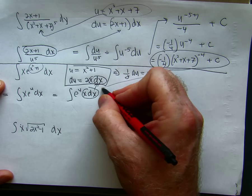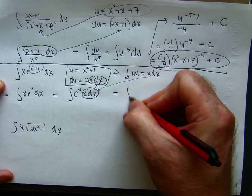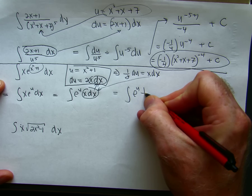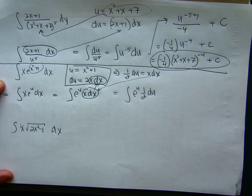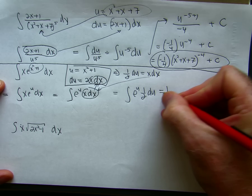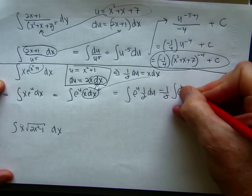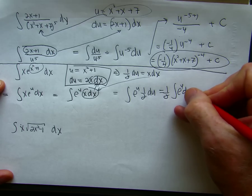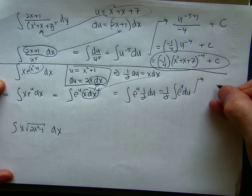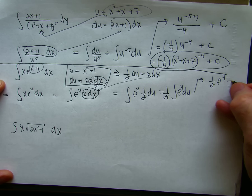So, now I can substitute that right into here. I'm going to take out the 1 half. And now I can integrate. Move that up here. That's going to be 1 half e to the u. The integral of e to the u is e to the u plus c.